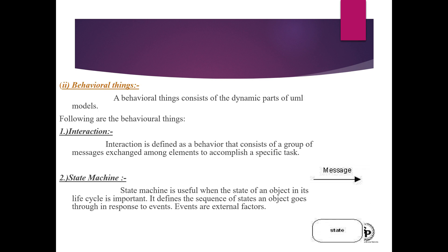Interaction, as the name suggests, is when one object interacts with another object with the help of message passing, which we already studied in object-oriented programming. Object-oriented analysis and design is used in UML for notation, like class and use case. Interaction is defined as behavior that consists of a group of messages exchanged among elements to accomplish a specific task.